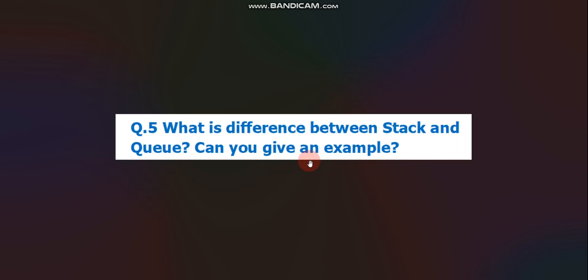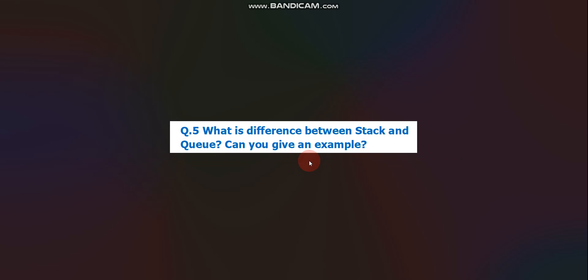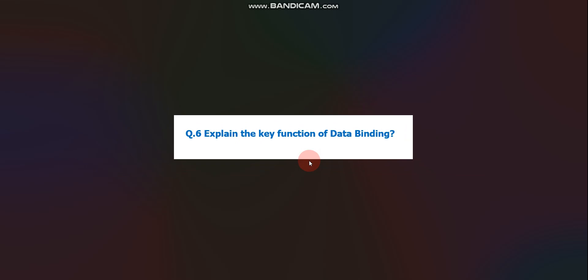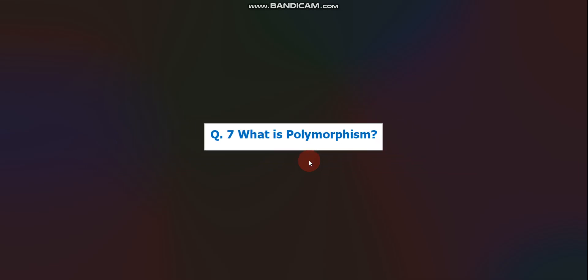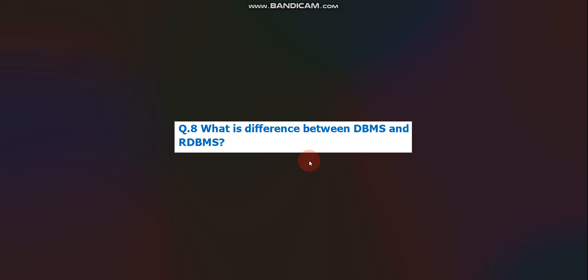Question number five: what is the difference between stack and queue? Can you give an example? Question number six: explain the key function of data binding. Question number seven: what is polymorphism? Please prepare OOP concepts. Question number eight: what is the difference between DBMS and RDBMS? Please prepare DBMS topics as well.